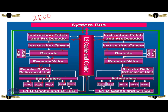The scheduler is connected to the reorder buffer and retirement unit. The decoder is connected to the RAM encoder. They are connected to the system bus.